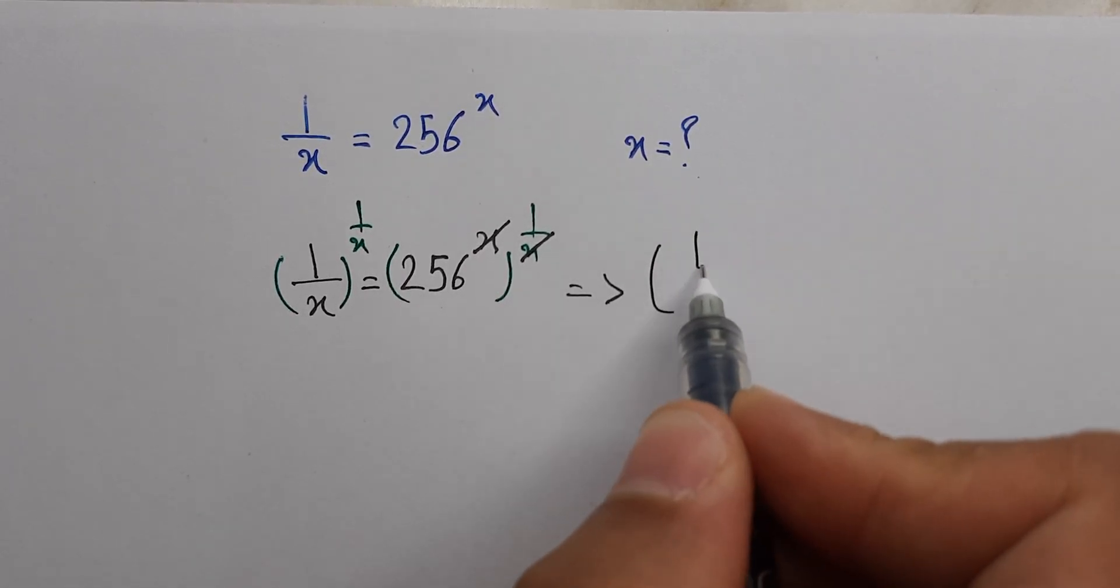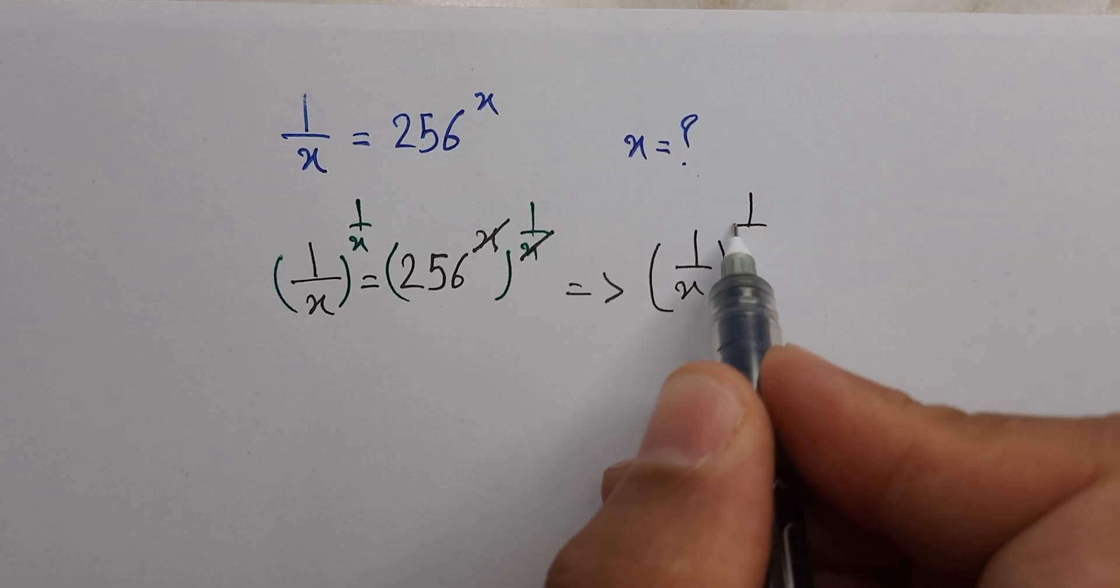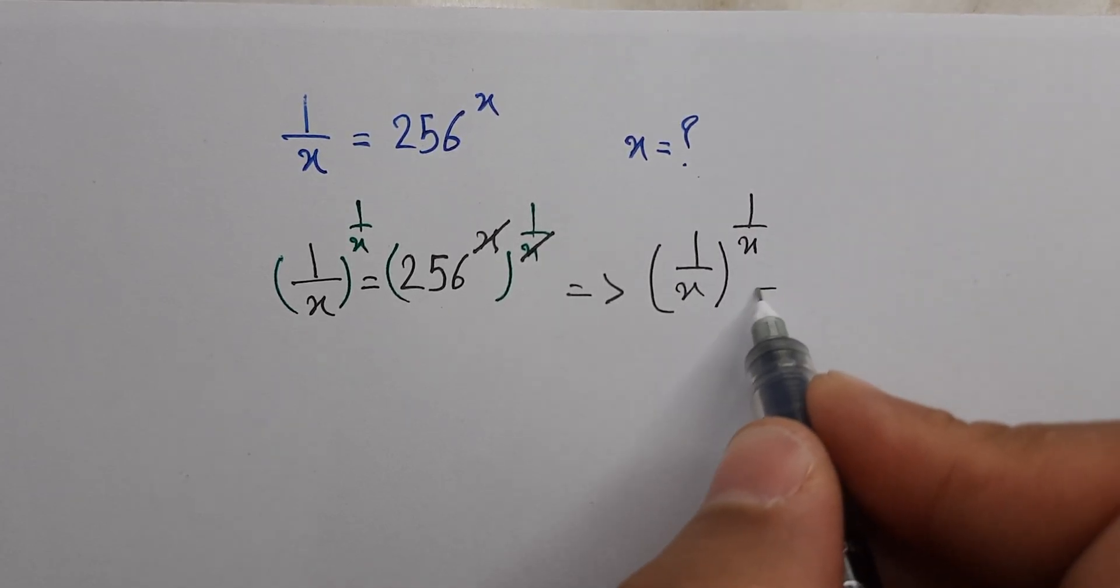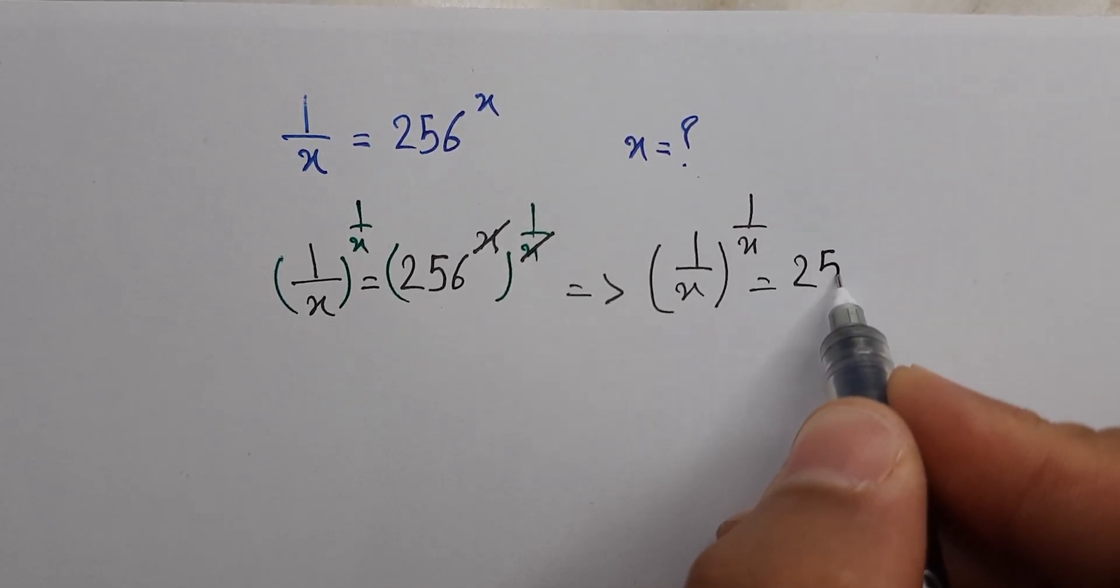Then we have 1 over x power 1 over x equals 256.